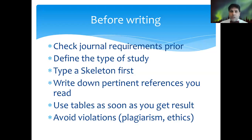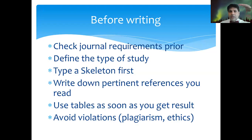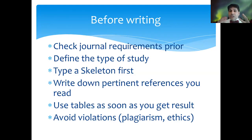You can go to one of the journals and find out what their requirements are. Define your study type and write the skeleton first. The skeleton is just the subheadings of the manuscript, including your title page, abstract, background, methods, results, and so on. Make sure when you're reading your references, especially in your background and discussion sections, you are writing down those pertinent references — it'll be very handy when you cite them.